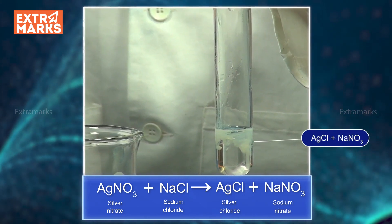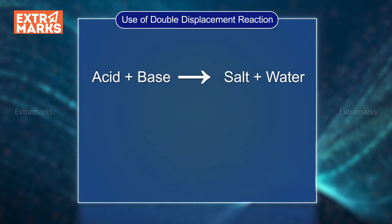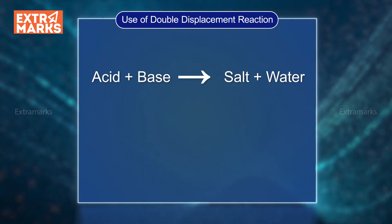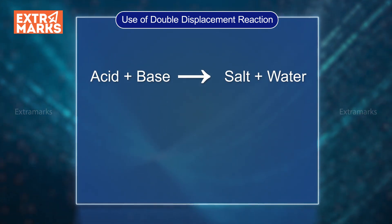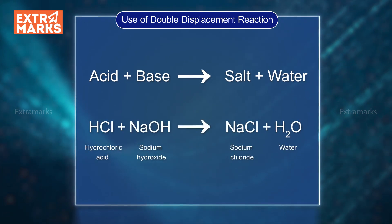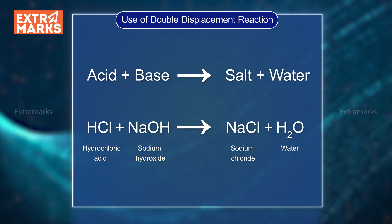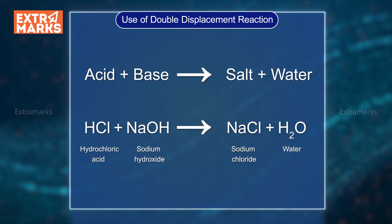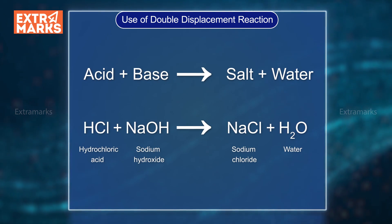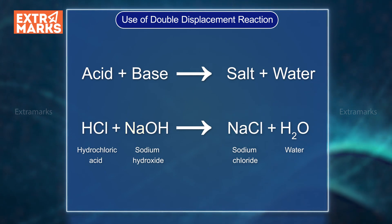What are the uses of these reactions? A double displacement reaction is used in the preparation of salts. Do you know that the neutralization reaction is a type of double displacement reaction? Carefully observe the reaction between hydrochloric acid and sodium hydroxide. It forms sodium chloride and water by the exchange of hydrogen of hydrochloric acid and sodium of sodium hydroxide.